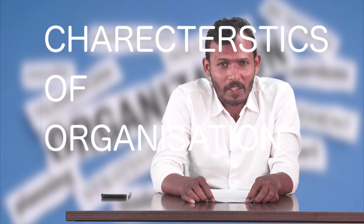Now let us discuss about the characteristics of organizations. The first characteristic is division of labor and specialization. Division of labor means assigning responsibilities to each and every component of the organizational structure to perform their tasks effectively and efficiently.